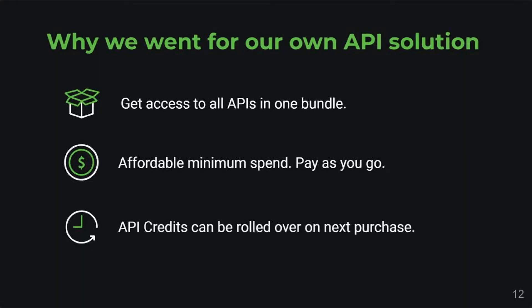Apart from that, we reduced the minimum spend to around 13 USD or 1,000 rupees per annum, compared to GSPs which charge a lot more. That's not affordable — we want to build something for SME businesses. And API credits can be rolled over on top of that. Win-win.